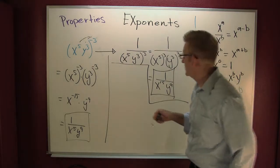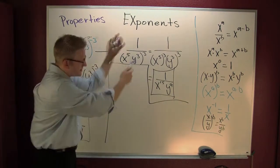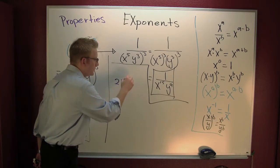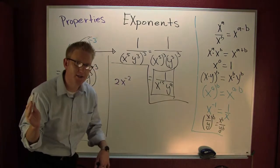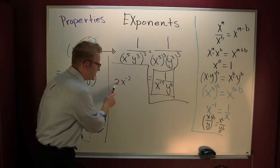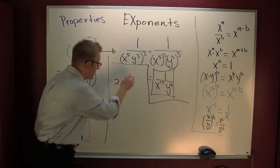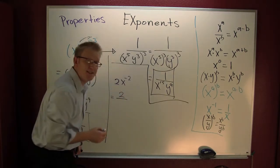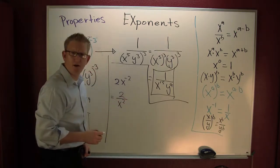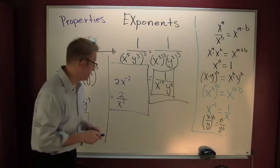Let's talk about something else. If you had 2x to the minus two — remember the discussion about the minus sign and parentheses — the minus two is only on the x, not on the 2. So this is the same thing as 2 in the numerator and x squared in the denominator.